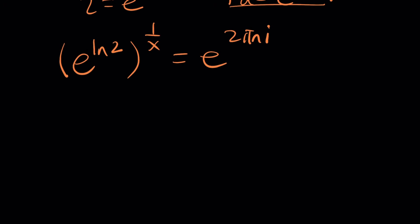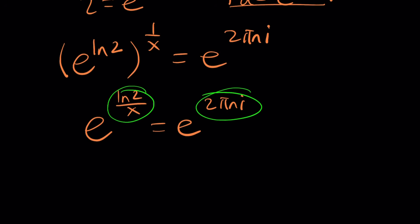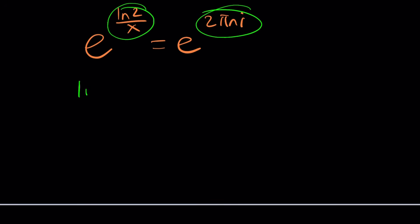So we're very close. Now, what are we supposed to do? Multiply the exponents. e to the power ln 2 divided by x equals e to the power 2 pi n i. Now we can go ahead and natural log both sides or just focus on the exponents. We can go ahead and set them equal to each other. And from here, we should get the solution. Yeah.